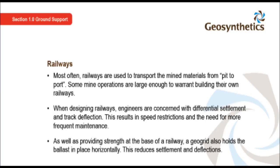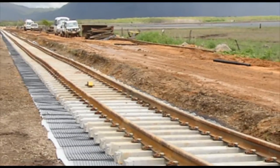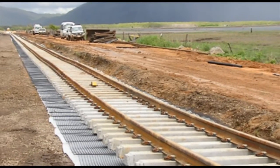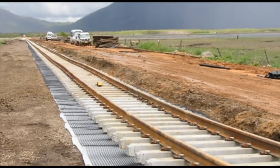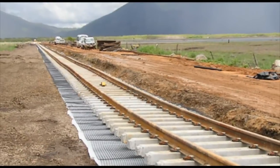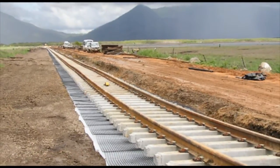As well as providing strength at the base of a railway, a geogrid also holds the ballast in place horizontally, reducing settlement and deflections. Here is a railway for a coal mine where a geotextile and a geogrid have been placed underneath the railway formation to minimise deflections and settlement.